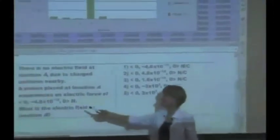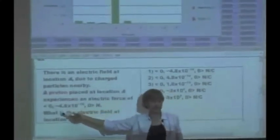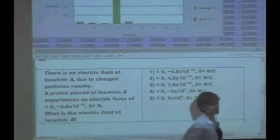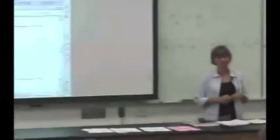We have negative 4.8 times 10 to the minus 16 divided by positive 1.9 times 10 to the minus 19, and we get negative 3 times 10 to the third newtons per coulomb.